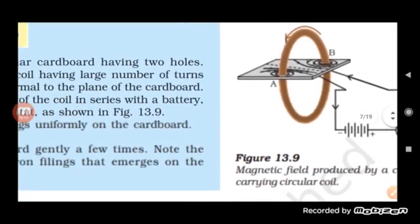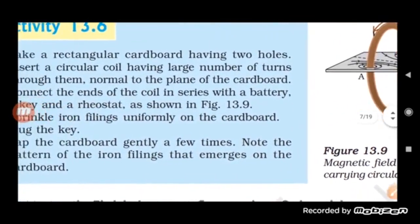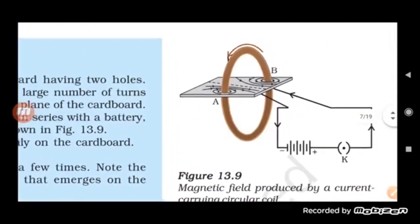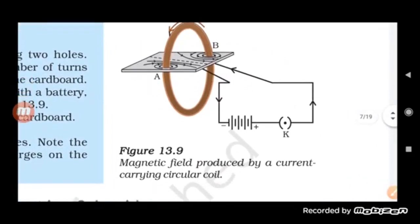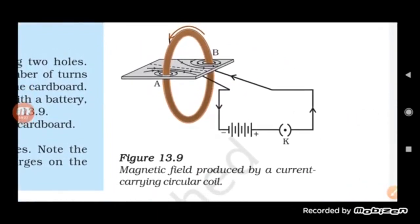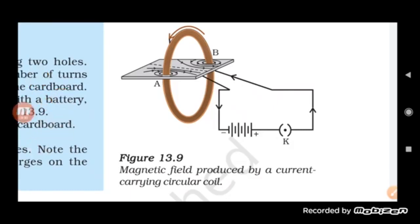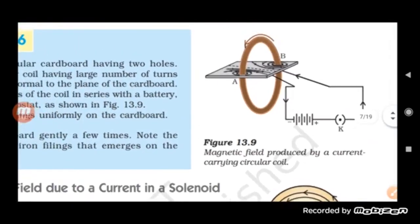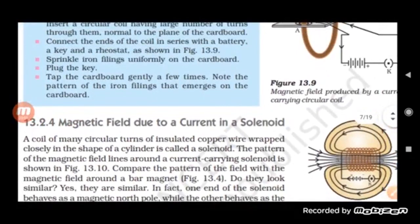We can say that even when a circular loop is used, it produces a pattern of iron filings that can be seen. This pattern tells us that the circular loop produces a magnetic field around it, and because of that the iron filings arrange themselves in a concentric circle pattern. Now let us see what kind of magnetic field is produced due to the current which flows in a solenoid.